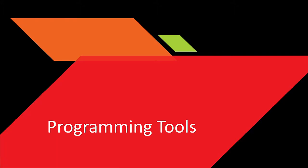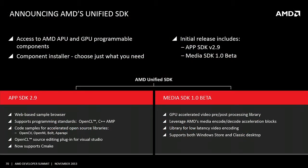Now let's talk about programming tools — you have your architecture and programming language, so how do you get your program debugged and optimized? Today we're announcing AMD's Unified SDK, which gives you access to all of our APU and GPU programmable components in a single unified software developer kit. It has a component installer letting you choose just what you need. The initial release includes APP SDK version 2.9 and Media SDK 1.0 beta, with deep dive sessions on the technical tracks tomorrow and Wednesday.